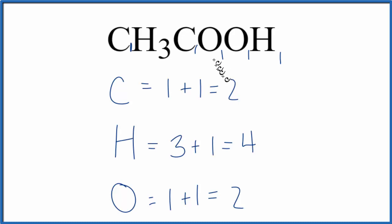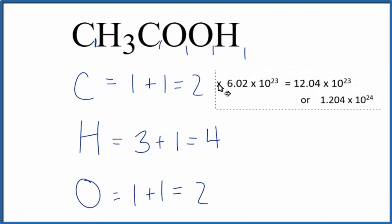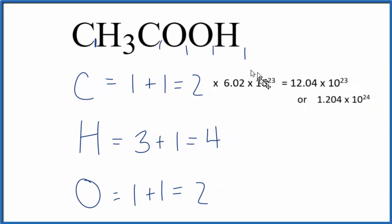Sometimes you're asked to figure out the number of, for example, carbon atoms in one mole of acetic acid. To do that, you just multiply the number of carbon atoms, we have two, times Avogadro's number. Two times Avogadro's number, that gives you the number of carbon atoms in one mole of acetic acid.